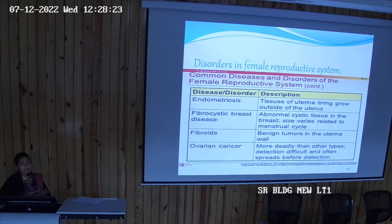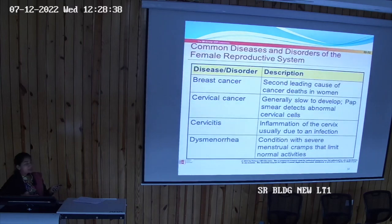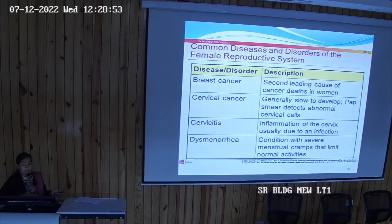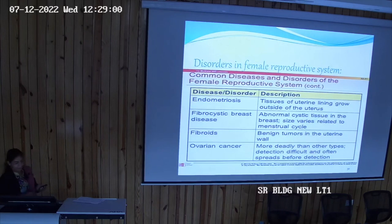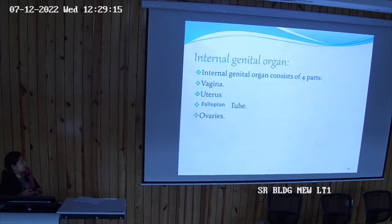Fibroids can be treated medically as well as surgically. Other conditions include ovarian carcinoma, breast cancer, cervical cancer, inflammation of the cervix, and dysmenorrhea — which is more of a symptom than a disease; any condition associated with cramps is called dysmenorrhea. These are some conditions related to the female reproductive system, and this concludes the general part of the female reproductive system.